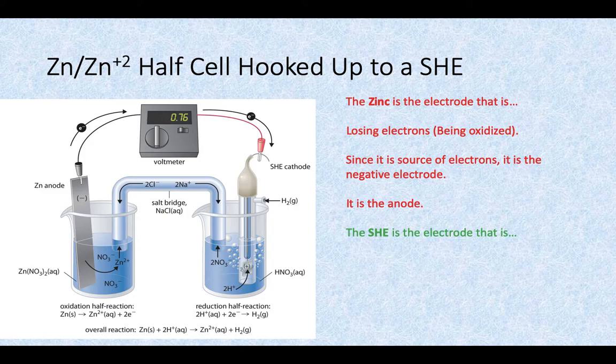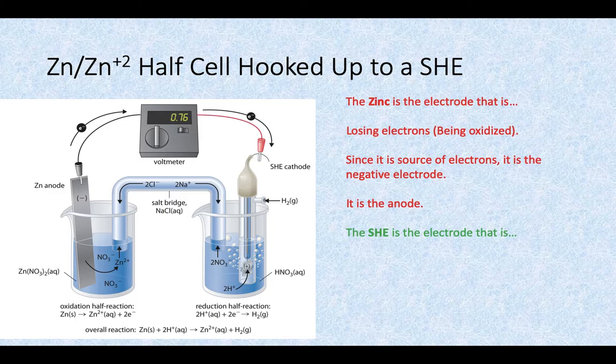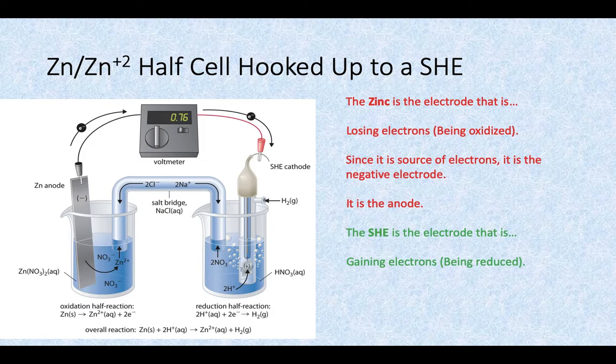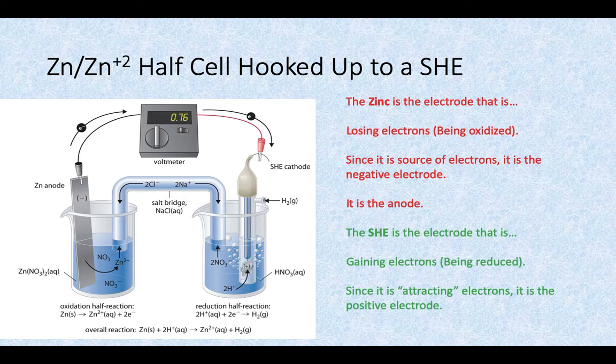The SHE in this setup is the one that's gaining the electrons, the electrons are heading towards it, it's being reduced. Since it's accepting the electrons, that makes it the positive electrode, and therefore the cathode of our battery.